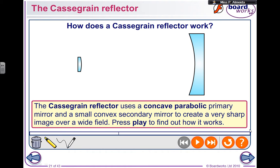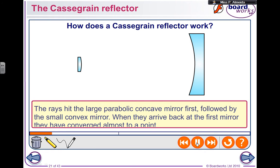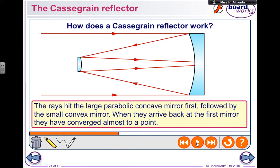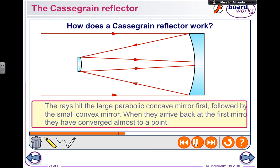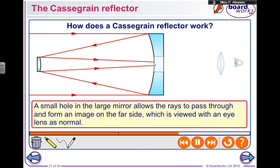There is a second type of reflecting telescope that uses mirrors. In this design, I have a concave parabolic mirror and then a small convex mirror. Light comes in from outside, reflects off the small convex mirror, and then passes through a hole so that the rays reflected by the second mirror converge. Then there's a lens where you can see the image.